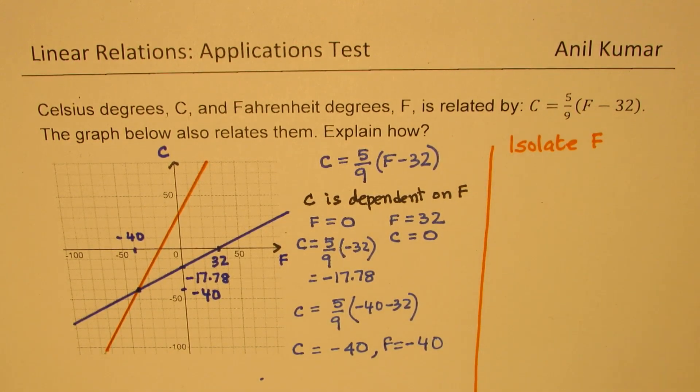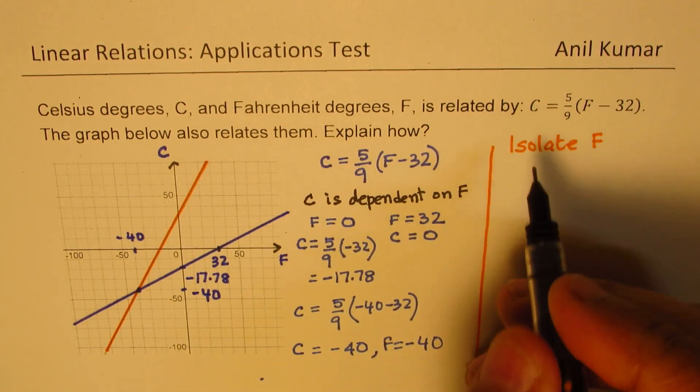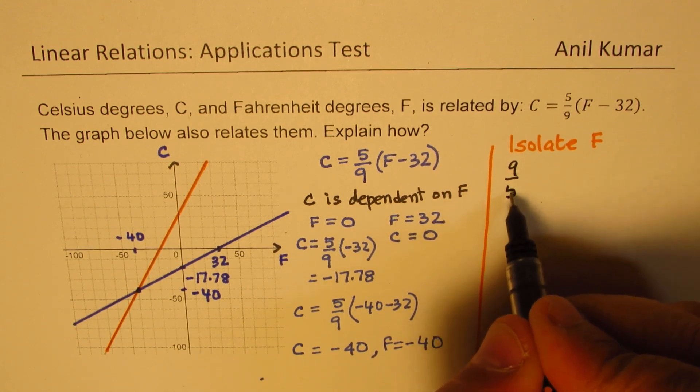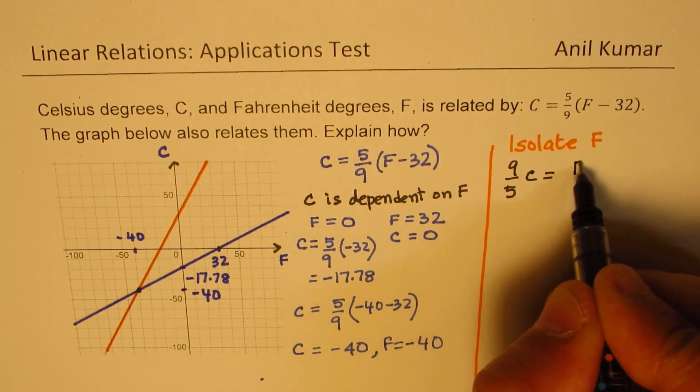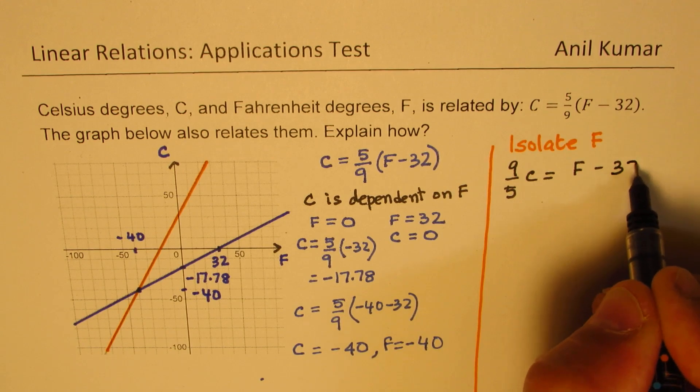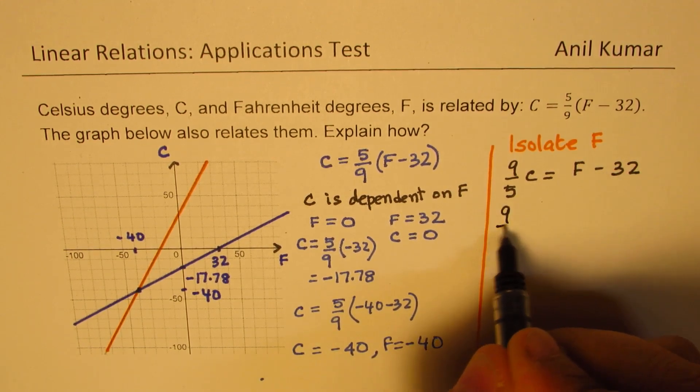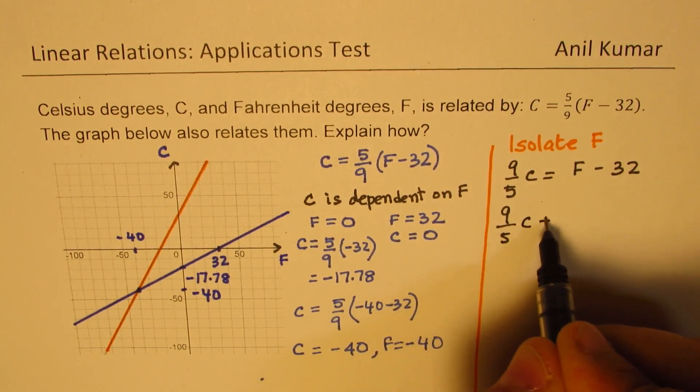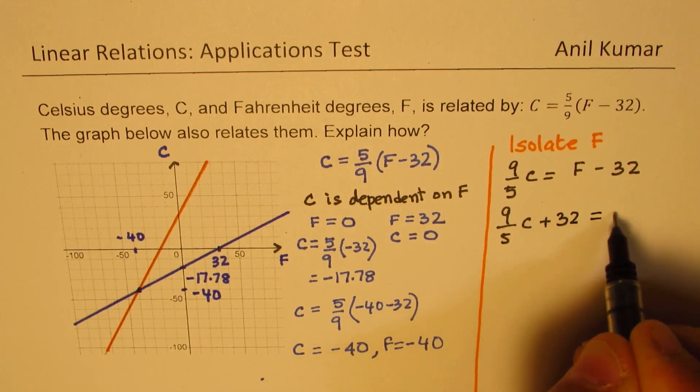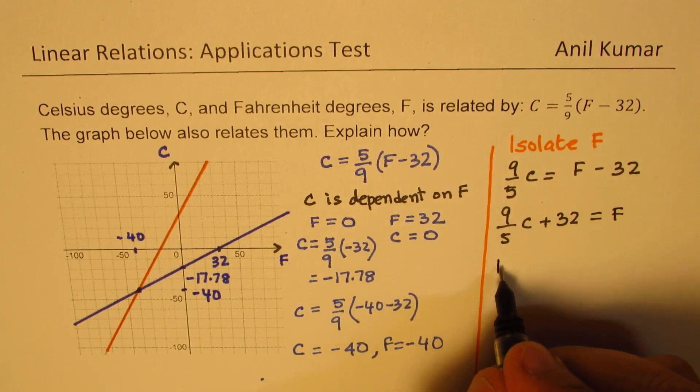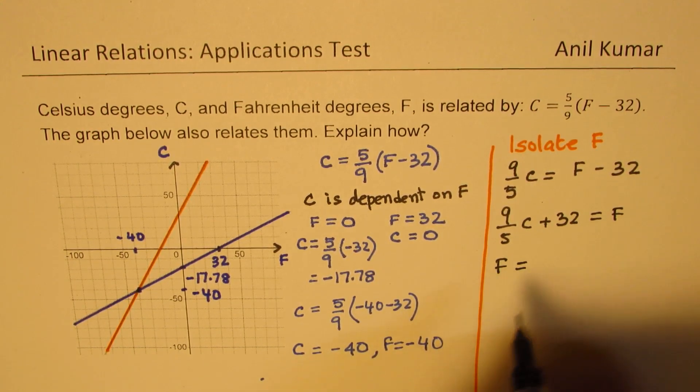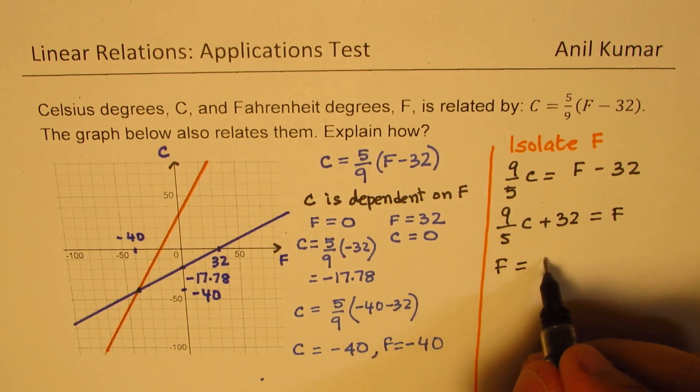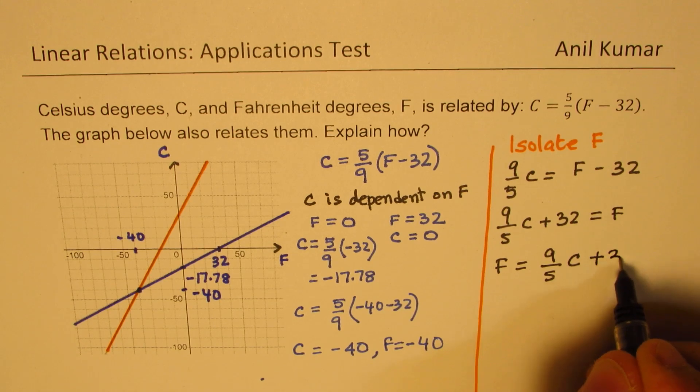We can isolate F from this equation. To isolate F, we have to multiply C by 9 and divide by 5. We get this as equal to F minus 32. Then we can write this as 9 by 5 C plus 32 equals to F. We get a formula which relates Fahrenheit to degrees Celsius, and that will be F equals 9 over 5 C plus 32.